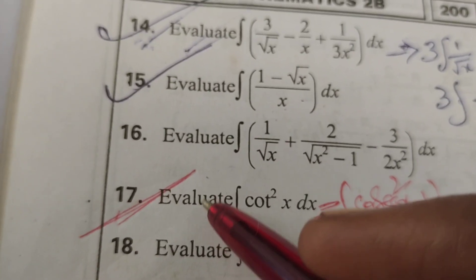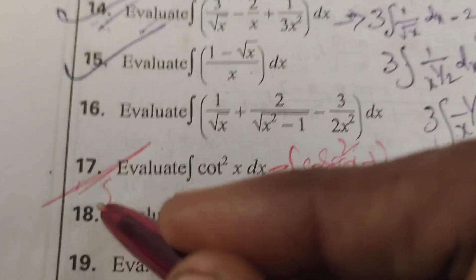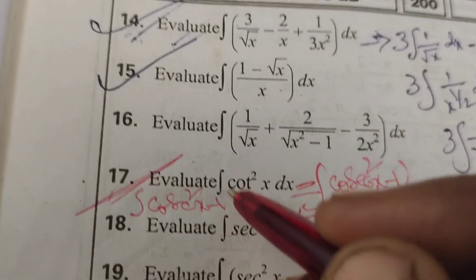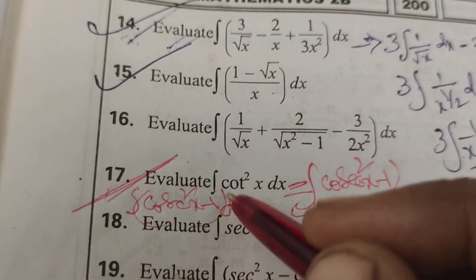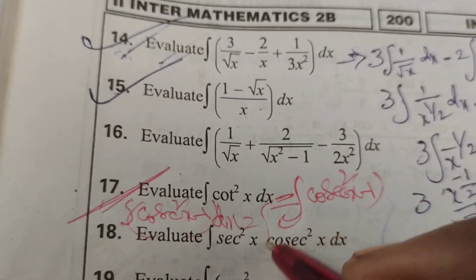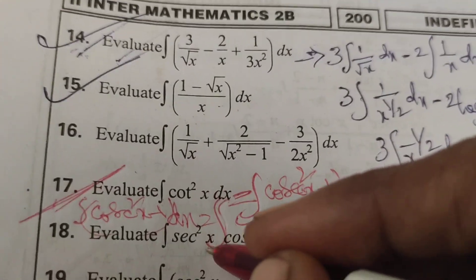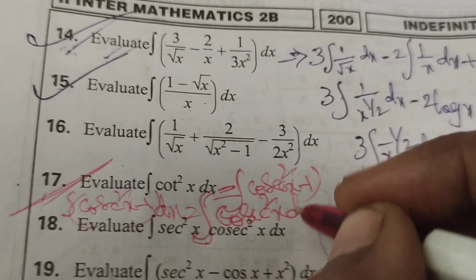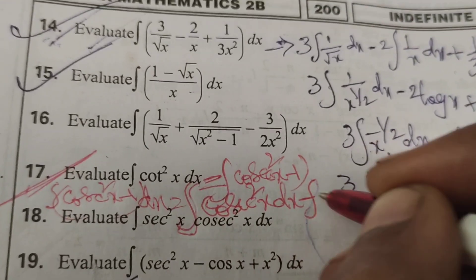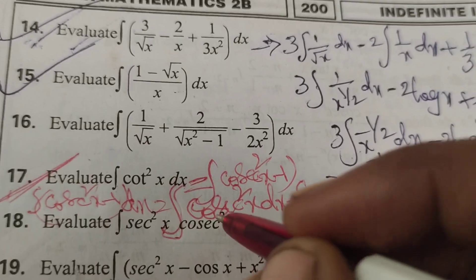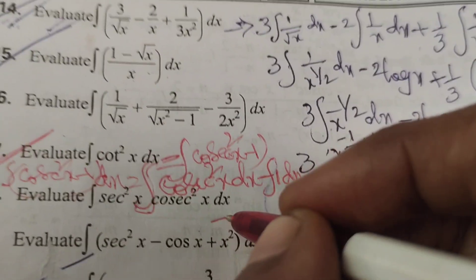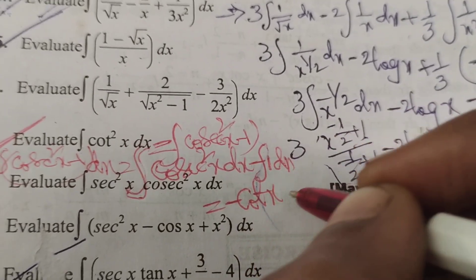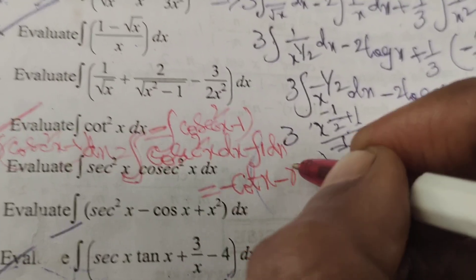We write the integral of cot square x as the integral of cosecant square x minus 1 dx. Integrating term by term: the integral of cosecant square x dx minus the integral of 1 dx gives us minus cot x minus x.